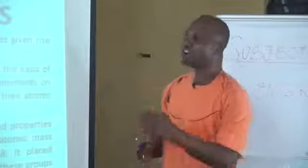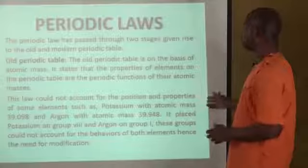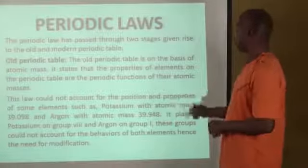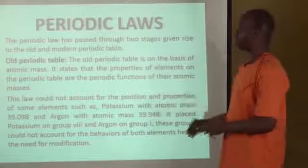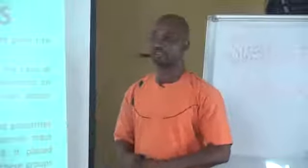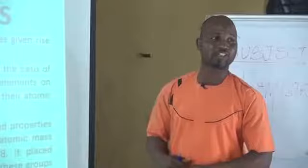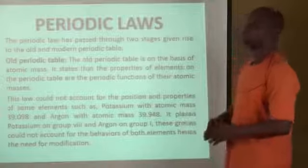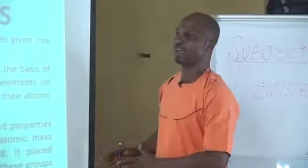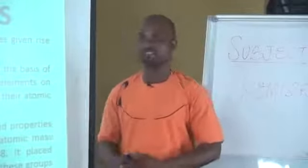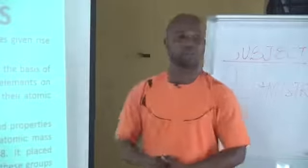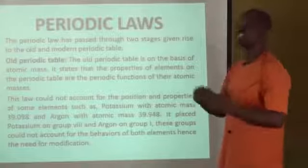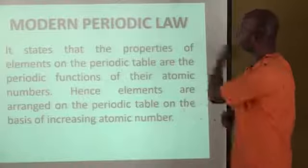There was a problem between argon and potassium. The atomic mass of potassium is 39.098 and that of argon is 39.948, which means argon has a bigger atomic mass than potassium. So based on the arrangement, potassium would come before argon. By so doing, potassium was placed in group 8 while argon was placed in group 1. Their position could not be accounted for by their properties, because group 8 elements were inert while group 1 elements were very reactive. Hence argon could not withstand the reactivity of group 1, and potassium could not withstand the inertness of group 8. As a result, there was a need for a modification of the periodic law, bringing us to the modern periodic law.